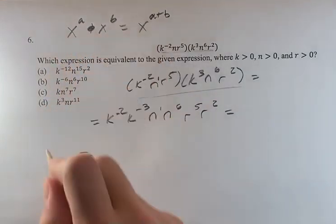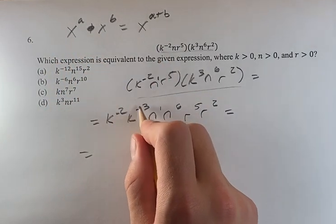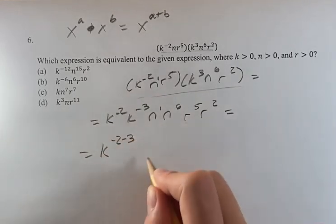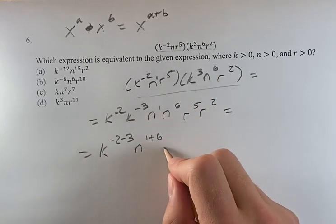And then using this rule, you can say this is k to the negative 2 plus negative 3, which is negative 2 minus 3. This is n to the 1 plus 6, and this is r to the 5 plus 2.